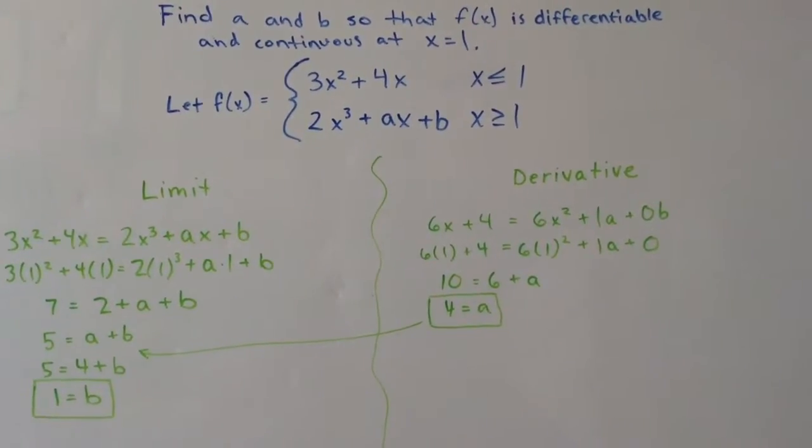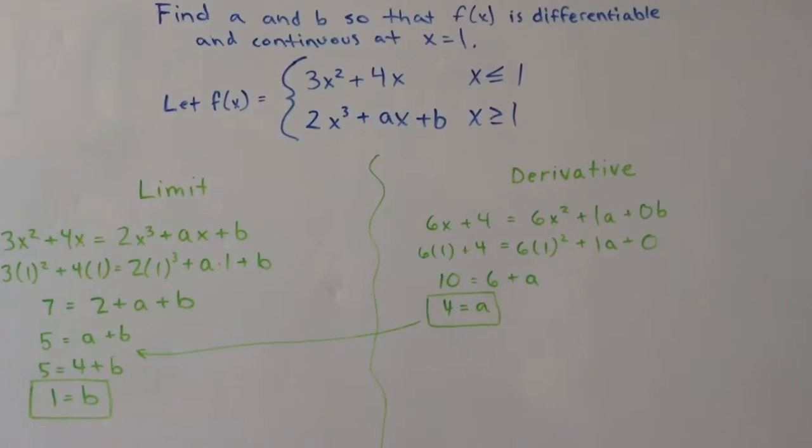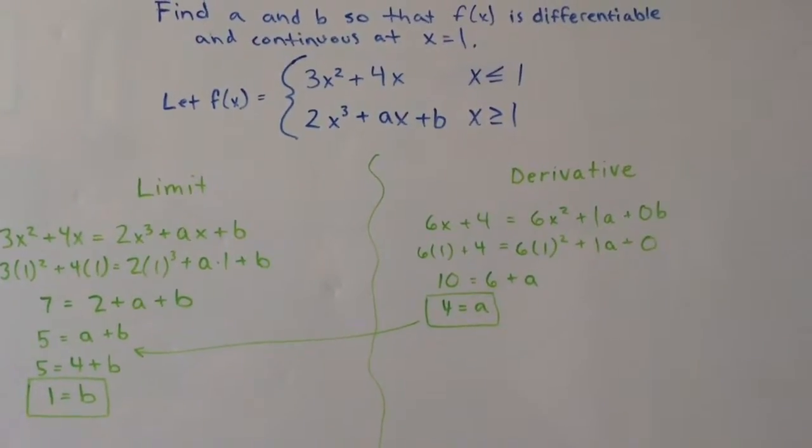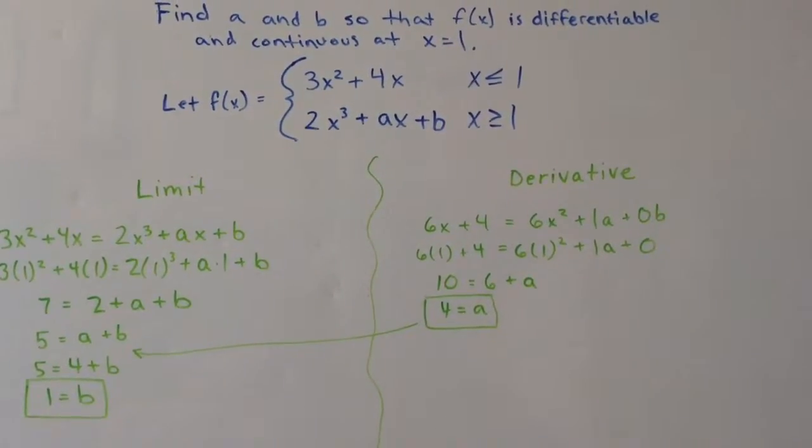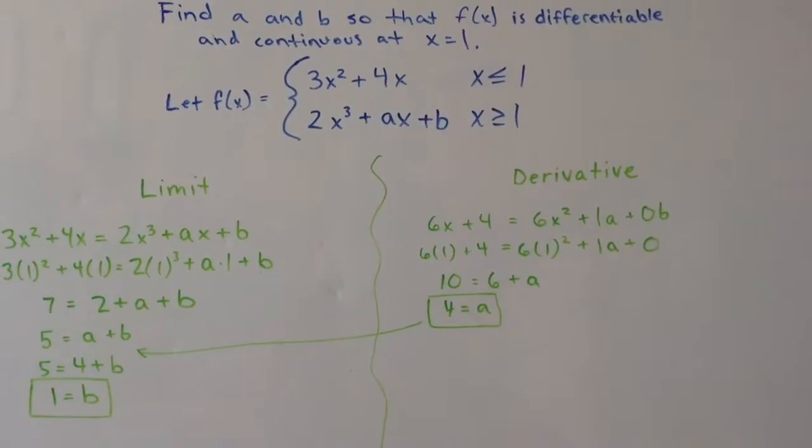To find a and b so that f of x is differentiable and continuous at x equals 1, we need to assume that the limit as x approaches from the left is equal to the limit as x approaches from the right.